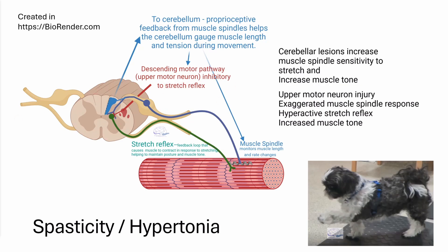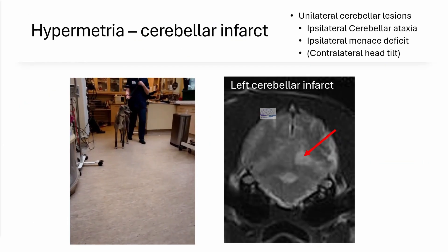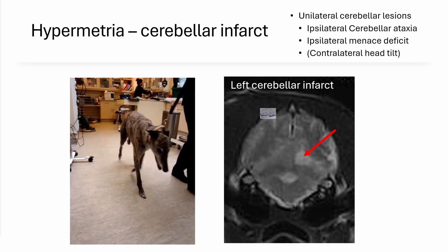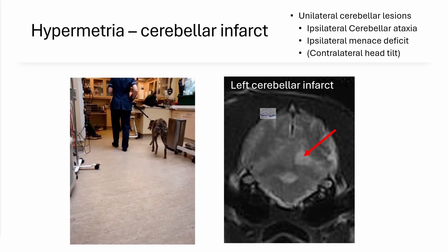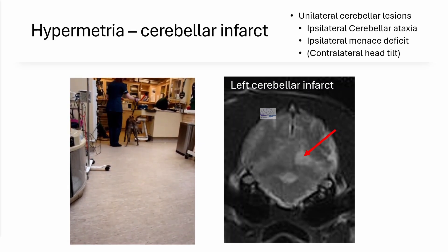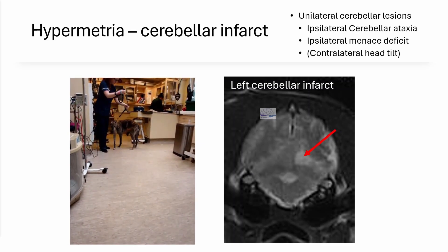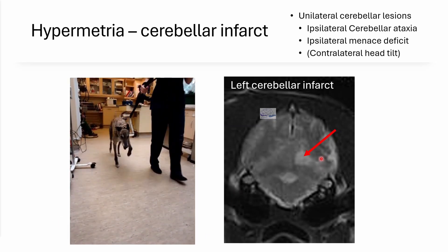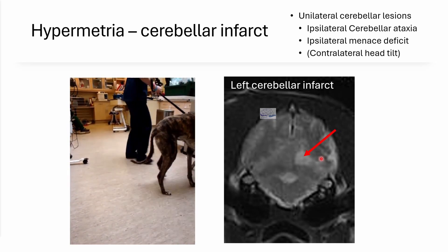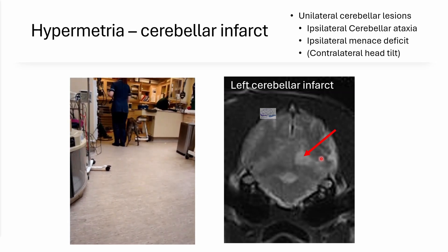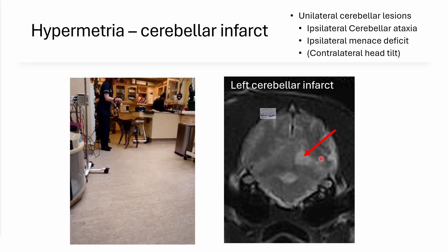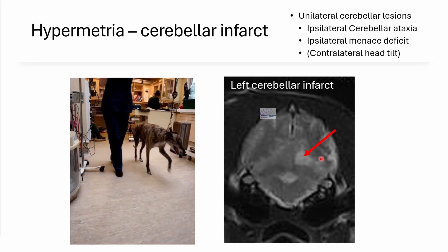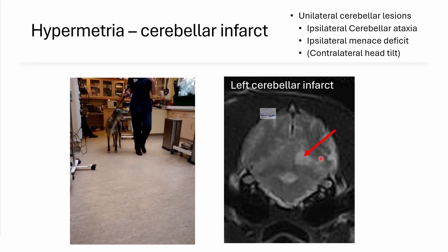Here are two examples of hypermetria. This first one shows hypermetria of the left forelimb due to a cerebellar infarct. It's a useful video because it shows the comparison between normal and abnormal in the same dog, since the infarct affects only one side of the cerebellum. You can see how the left leg is lifted with all joints flexed, compared to the more normal right thoracic limb.